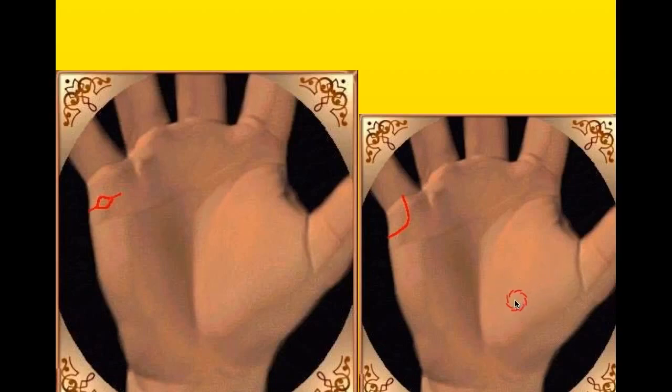Therefore lovers should have a strong mount of Venus. When this mount of Venus is strong, then there would be big affection to each other and love and passion.